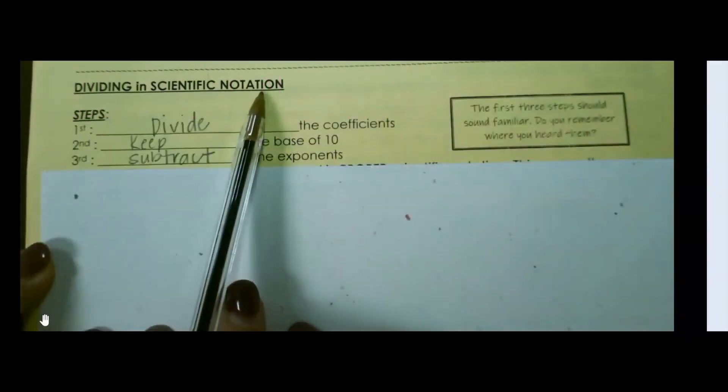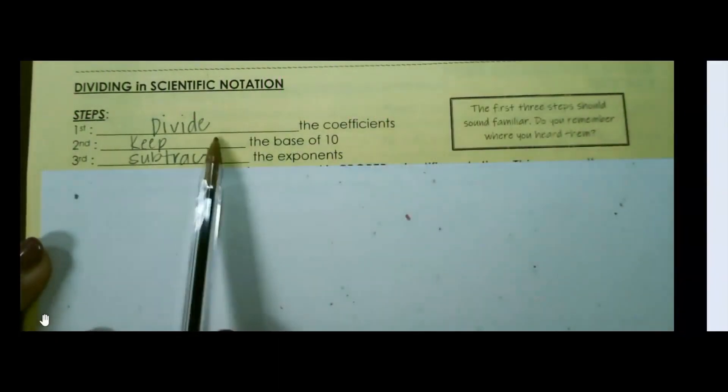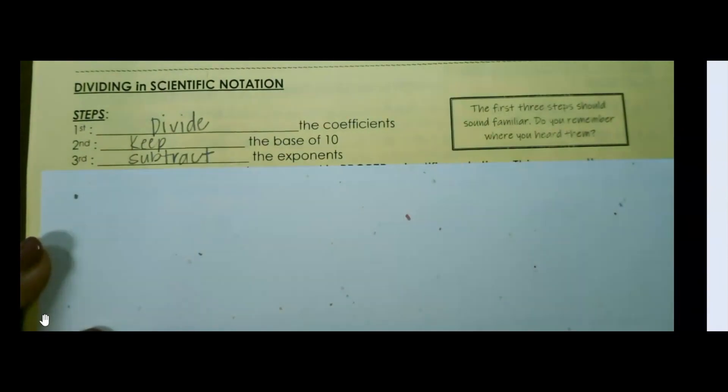Let's look at dividing in scientific notation. The first three steps should look similar to what we did when we were just dividing exponents. Divide the coefficients, keep the base of 10, and subtract the exponents.